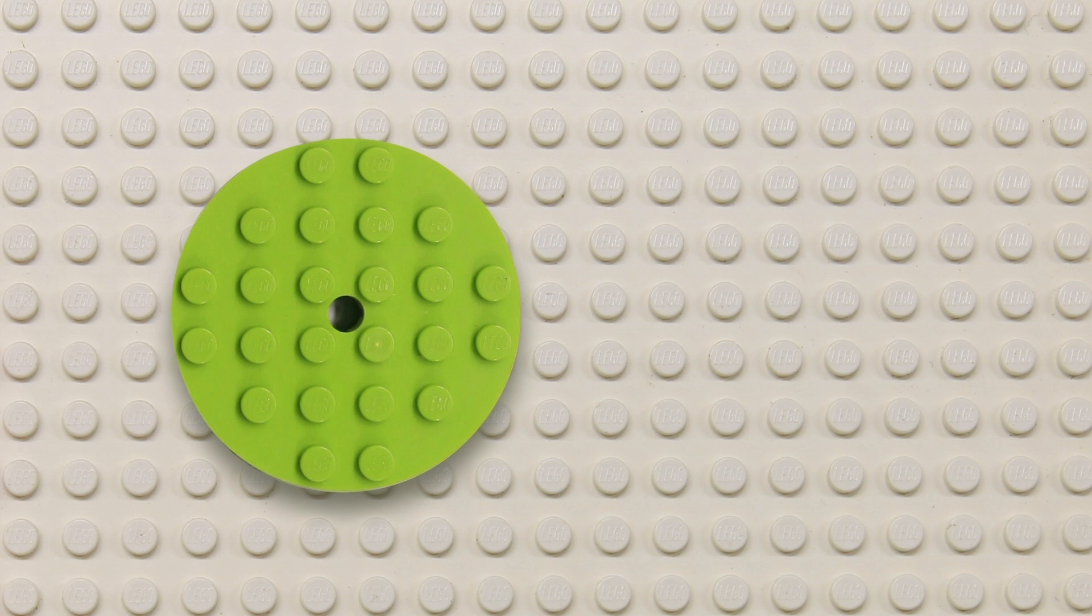For circles, the curvature is easy to calculate. A circle with a radius of 3 would have a curvature of 1 over 3, or a third.